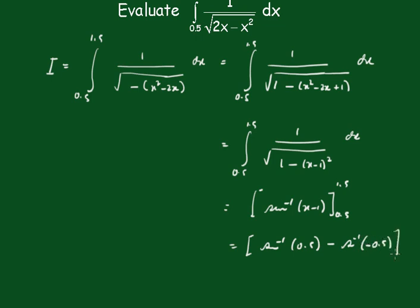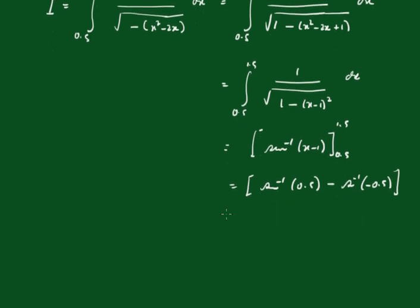And of course this is going to be equal to pi upon 6, minus inverse sine of minus 0.5 is minus pi upon 6, so that gives the result of pi upon 3.